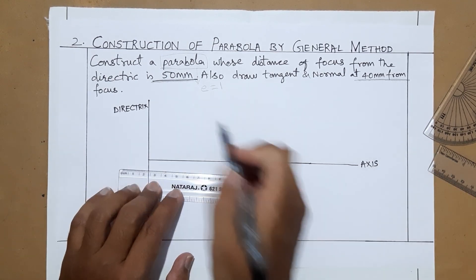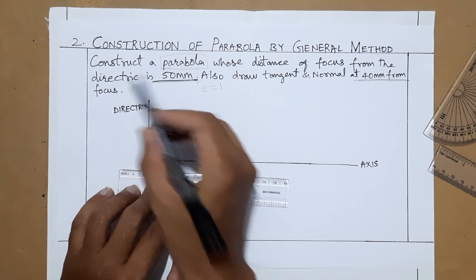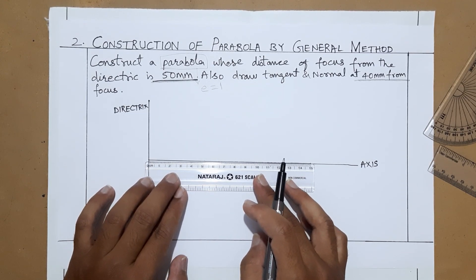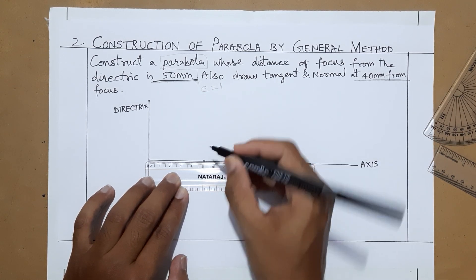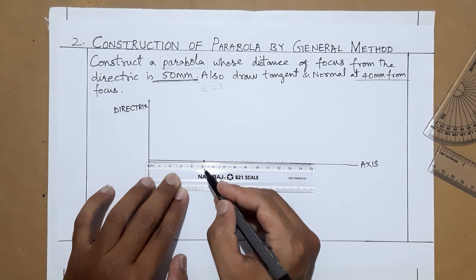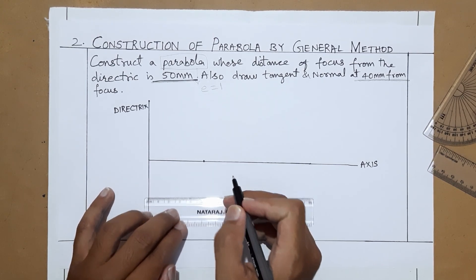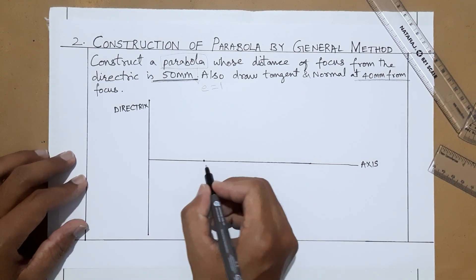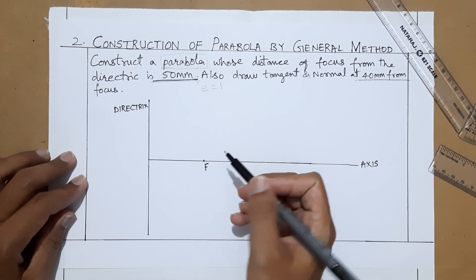The focus is located on the axis at a distance of 50 mm from the directrix. So mark 50 mm along the axis — that is 10, 20, 30, 40, and 50 mm, which is 5 cm. This point is the focus F.